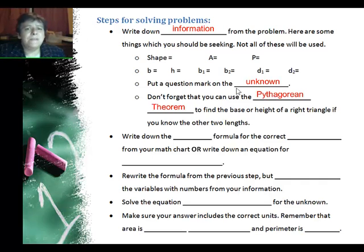Well once you've identified all the information, and this is really the most important step to start, then you say okay I'm looking for either area or perimeter for this type of shape. So you're going to write down the area formula for the correct polygon from your math chart or an equation for perimeter. And in some cases, perimeters just add up all the sides.